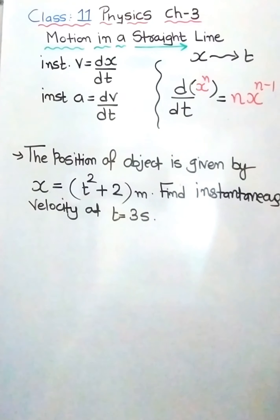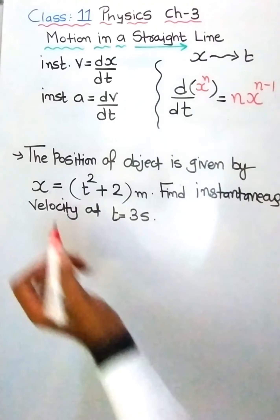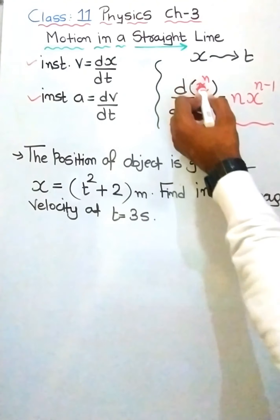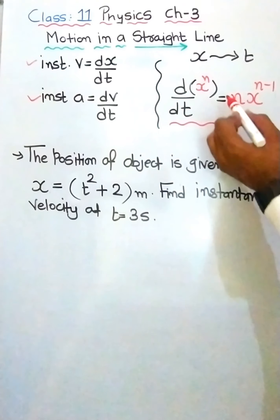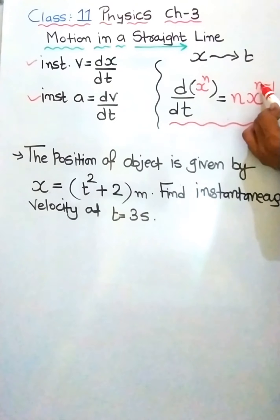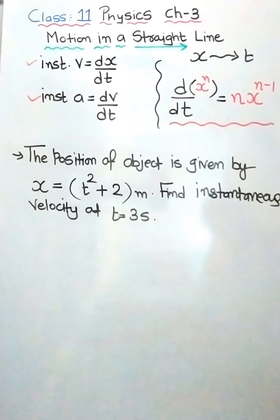Now let us see instantaneous velocity with the differentiation formula you have already studied. The formula is: d/dt of x raised to n equals n times x raised to (n − 1). The power becomes the coefficient and the power is then reduced by 1. Now, a practical example: suppose the position of the object is given by x = t² + 2 meters. We have to find the instantaneous velocity at t = 3 seconds, using v = dx/dt.